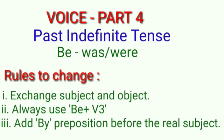See the form of B here. B will be changed into 'was' or 'were'. Rules are like the previous rules — exchange subject and object, change subject and object's positions. The second rule: always use B plus V3, the verb's past participle form. Here B is 'was' or 'were'.